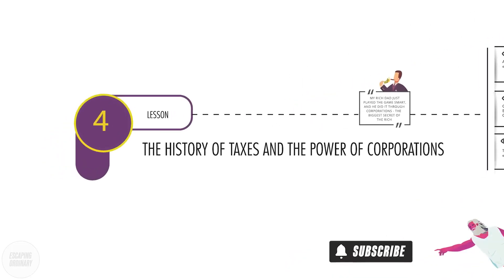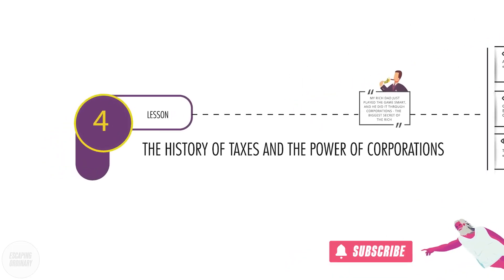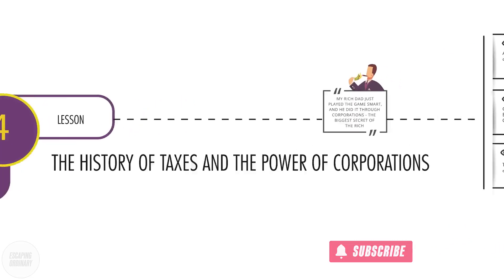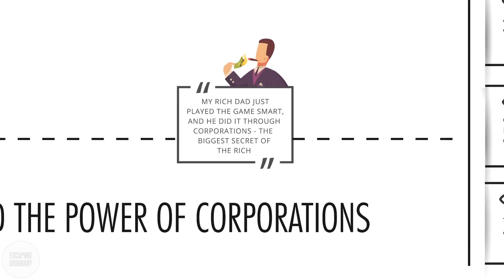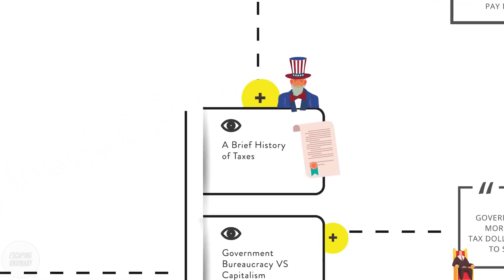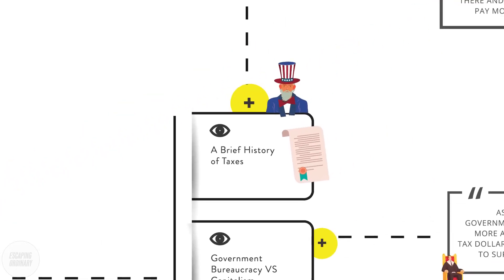Lesson four: the history of taxes and the power of corporations. My Rich Dad just played the game smart, and he did it through corporations — the biggest secret of the rich.